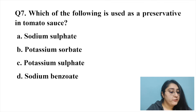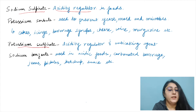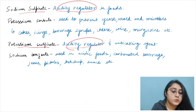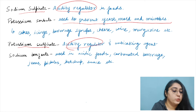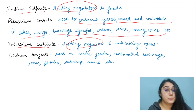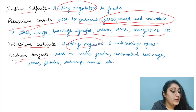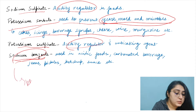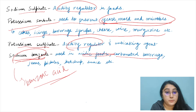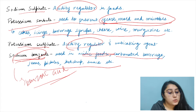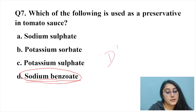Question seven: which is used as a preservative in intermediate moisture foods? Sodium sulfate and potassium sulfate act as acidity regulators. Potassium sorbate prevents yeast, mold, and microbes in high-moisture foods like cakes, cheese, and wine. Sodium benzoate converts to benzoic acid and is used in acidic foods like carbonated beverages, jam, pickle, ketchup, and sauce. Therefore sodium benzoate — option D — is the correct answer.